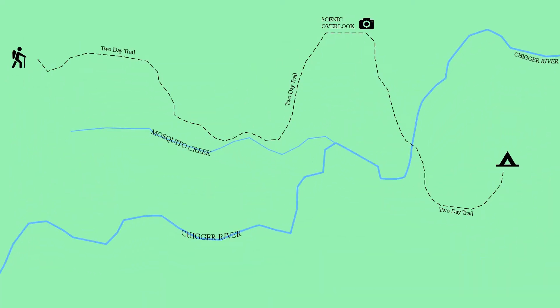Let's use this basic fictional map that I came up with on the computer. You heard from some friends that this is a great two-day trip. You hike into the campsite from the trailhead, you spend the night, and then you take the second day and you hike back out in the reverse process. Now, there are three waypoints along this trail that are easily identified: one is where the trail parallels Mosquito Creek, one is the scenic overlook, and the third is where the trail crosses Chigger River.